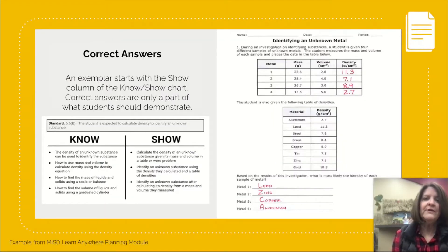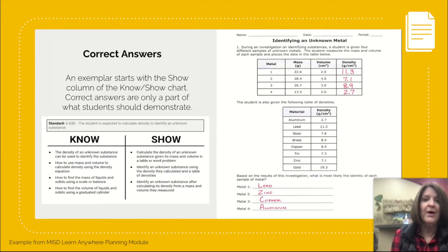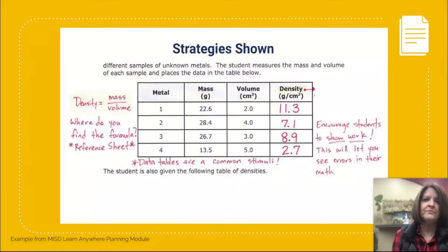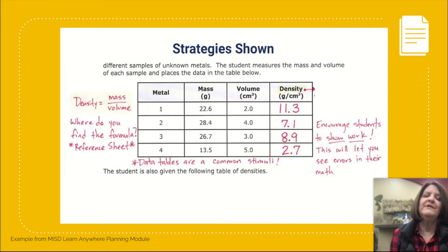Here's an example of an exemplar in science. It starts with the show column of the know/show chart. Correct answers are only a part of what students should demonstrate — we also want to know how they got that answer. This slide shows strategies such as the formula they would use and where to find that formula, and it also shows their work in order for you to see any errors in their calculations.